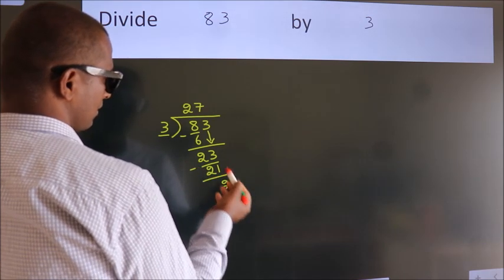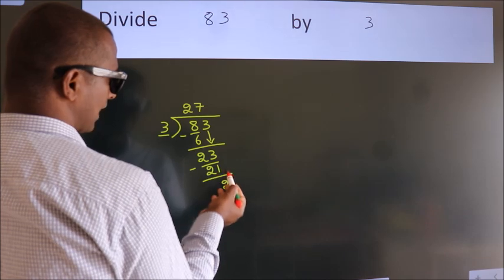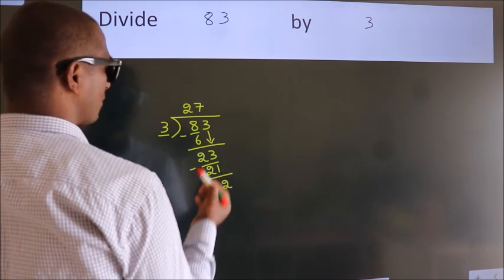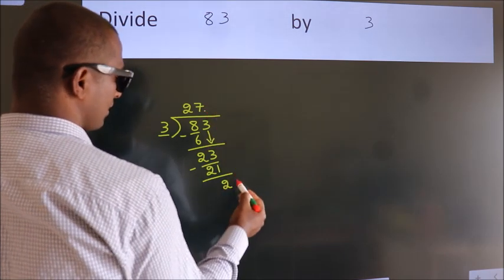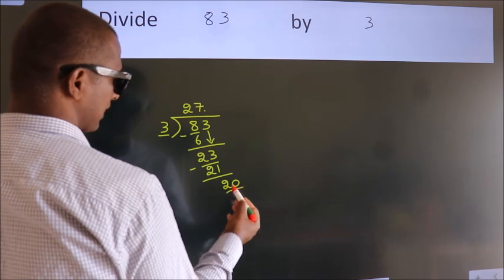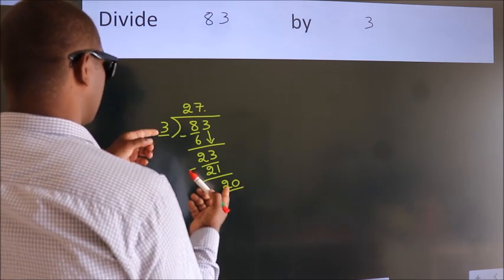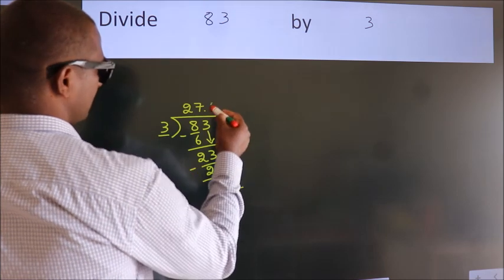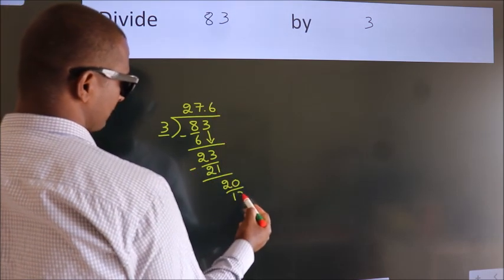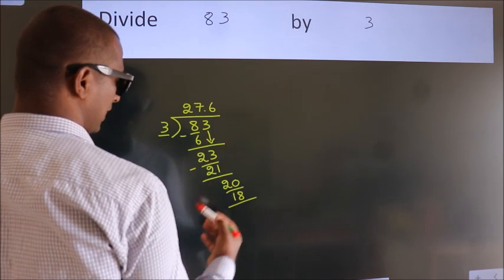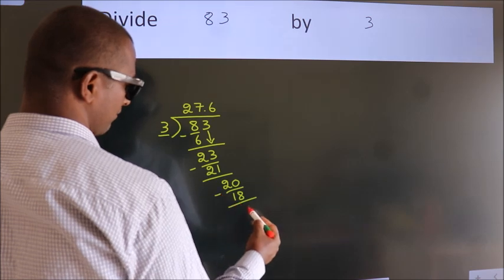After this, no more numbers to bring it down. So what we do is, we put a dot and take 0. So 20. A number close to 20 in the 3 table is 3 times 6 equals 18. Now we subtract, we get 2.